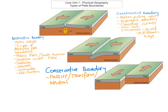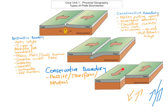One thing to note is that the plates don't always have to be going in opposite directions — they can actually be going in the same direction. If one plate is travelling at a faster speed than the other, it will cause friction along the plate boundary, and that is also a conservative plate boundary. If they are travelling in opposite directions, you do tend to get more severe friction and worse earthquakes.